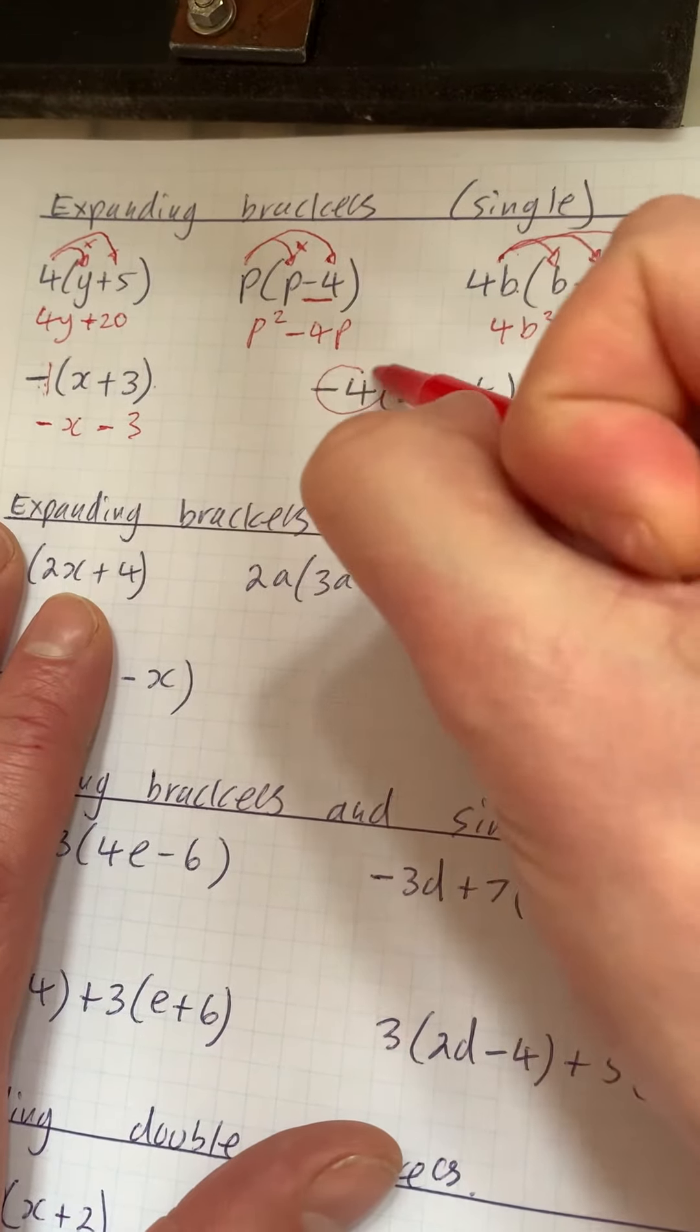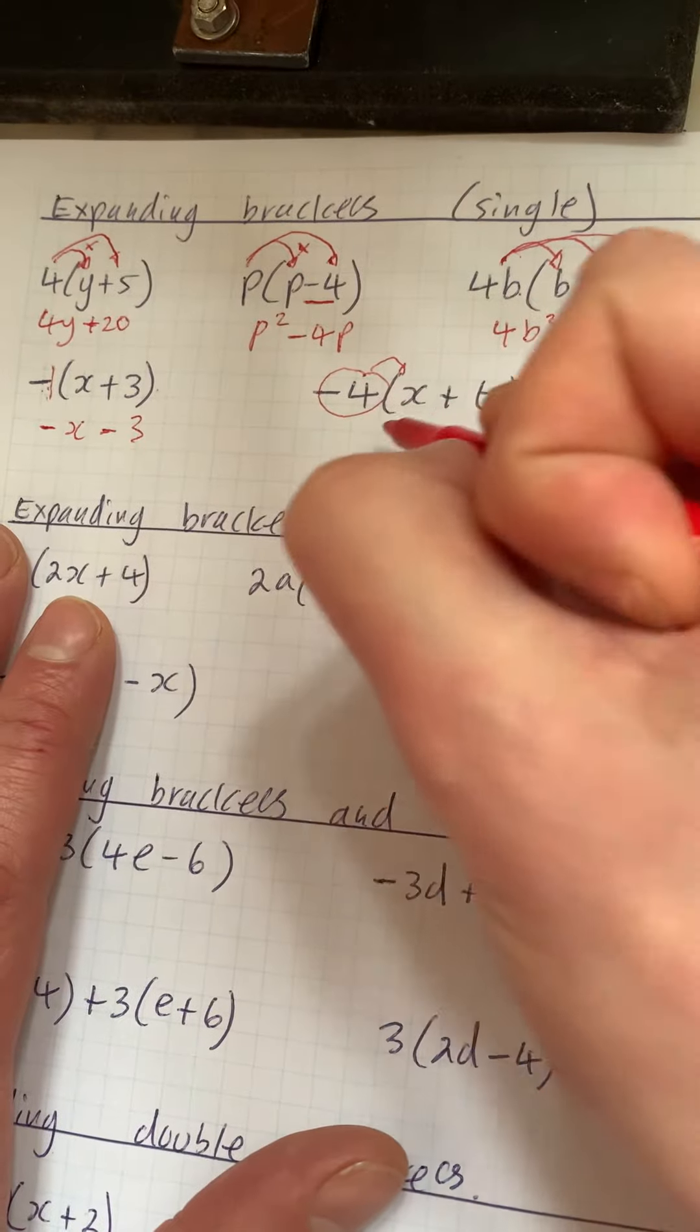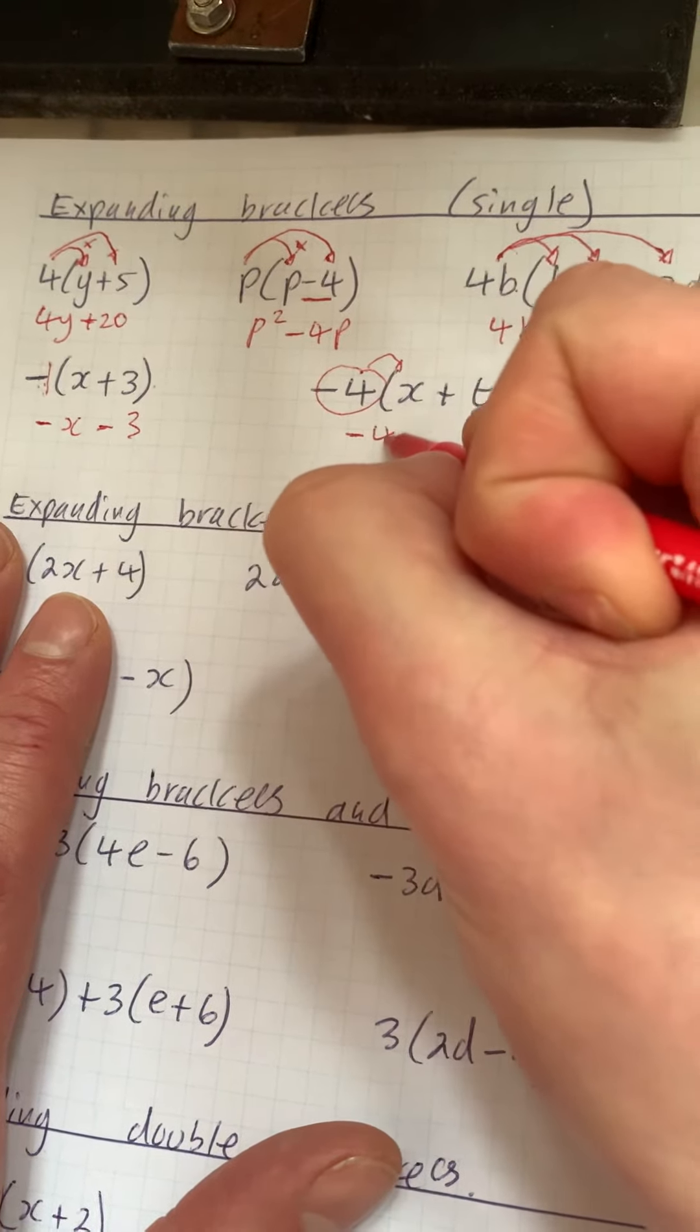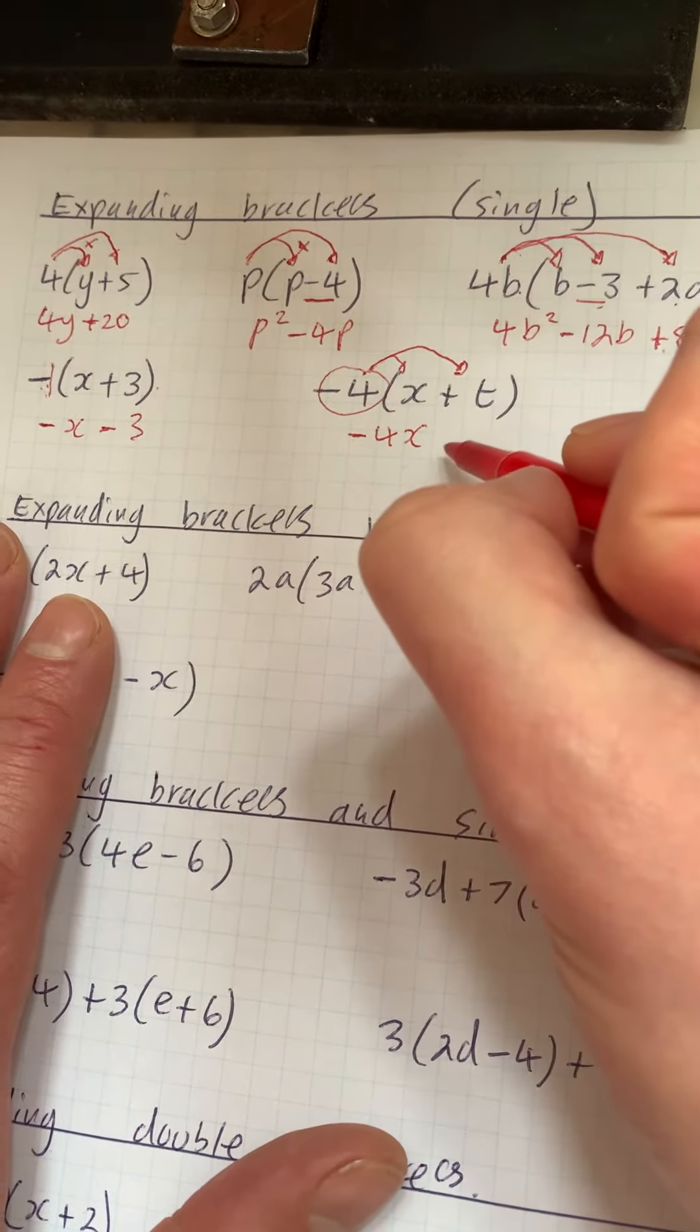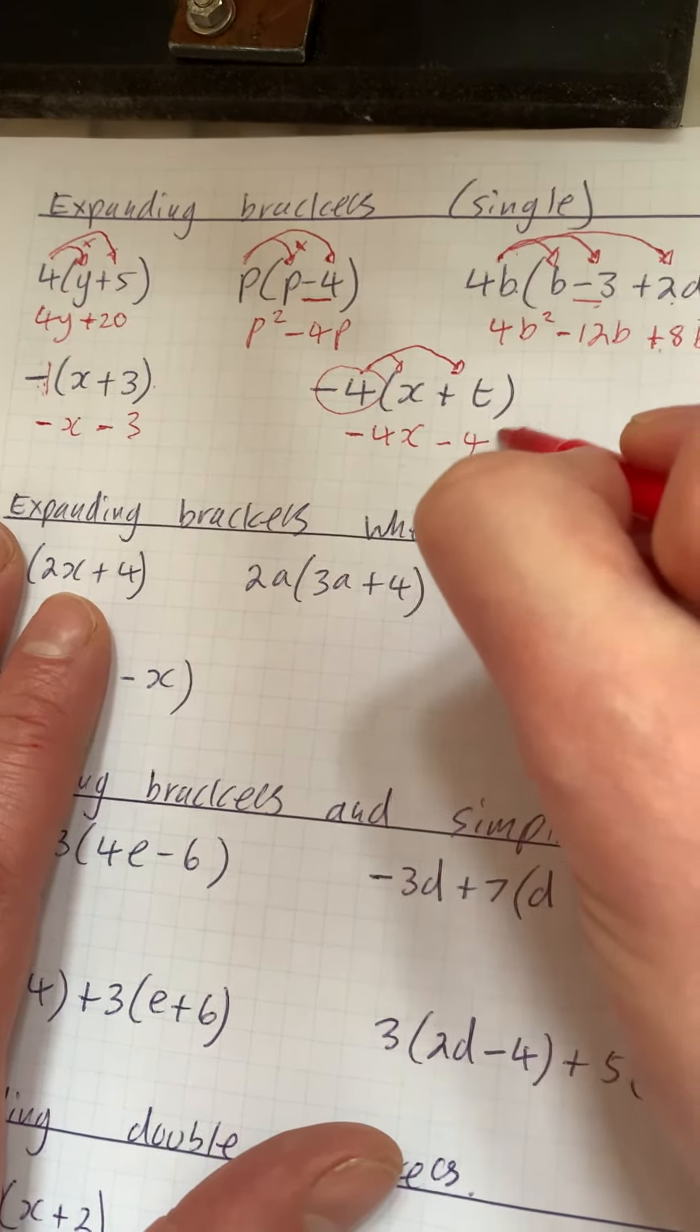Next one, we've got minus 4 times x, which is minus 4x. And then we've got minus 4 times t, which is minus 4t.